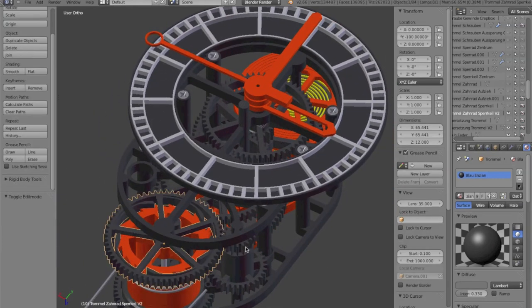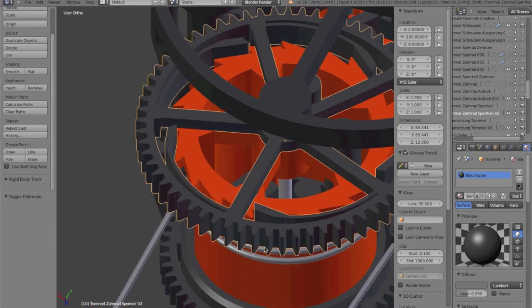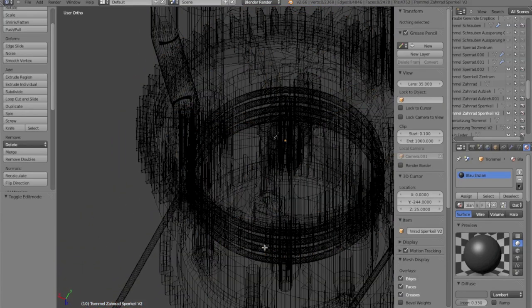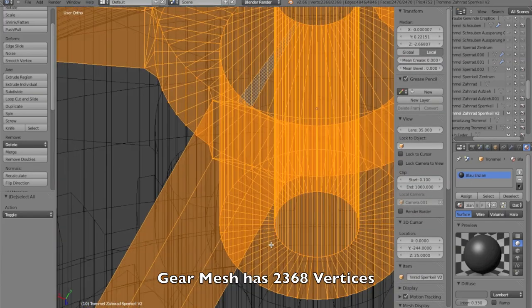Here as an example you can see the gear for the pulley. It is a mesh that consists of many, many vertices.